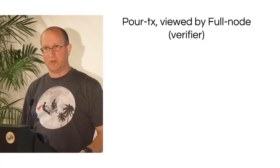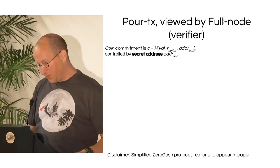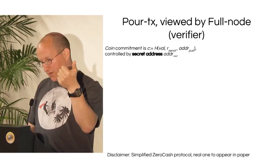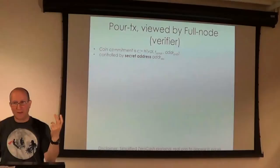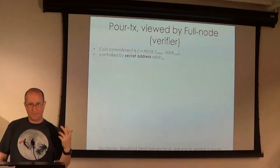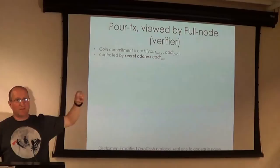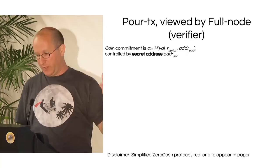Here is what a Pour transaction looks like to a miner or verifier. A coin commitment commits to the coin's value, an address that controls the coin, and a piece of serial randomness that will be used to generate a serial number. The value is how much is in the coin. The public address lets us know who controls the coin. The serial number will be used to destroy the coin and prevent double spending. The coin is controlled by a secret key, and its public key is the hash of that secret key.